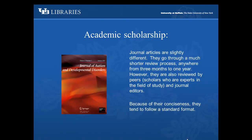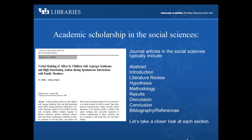Journal articles are slightly different. They go through a much shorter review process, anywhere from three months to one year. However, they are also reviewed by peers — scholars who are experts in the field of study — and journal editors.